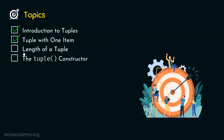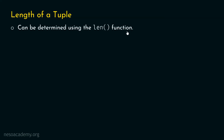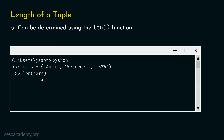Let's move on to the next topic: length of a tuple. We can easily determine the length of a tuple using the len function. For example, with cars equal to Audi, Mercedes, BMW — there are three items. Let's hit enter and type len(cars). Hitting enter again, we get three as the result. With this, we are done with this topic.